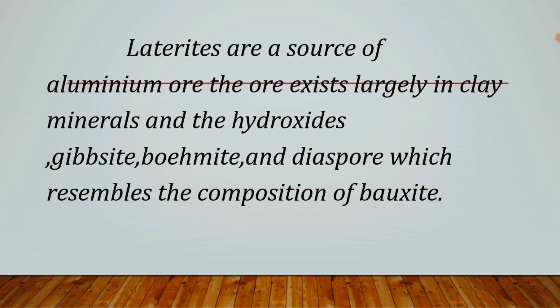Laterite soil is a source of aluminium. It consists largely of clay minerals, along with hydroxides and other minerals. It also contains compounds resembling gibbsite, boehmite, and diaspore, which are related to aluminium oxide.